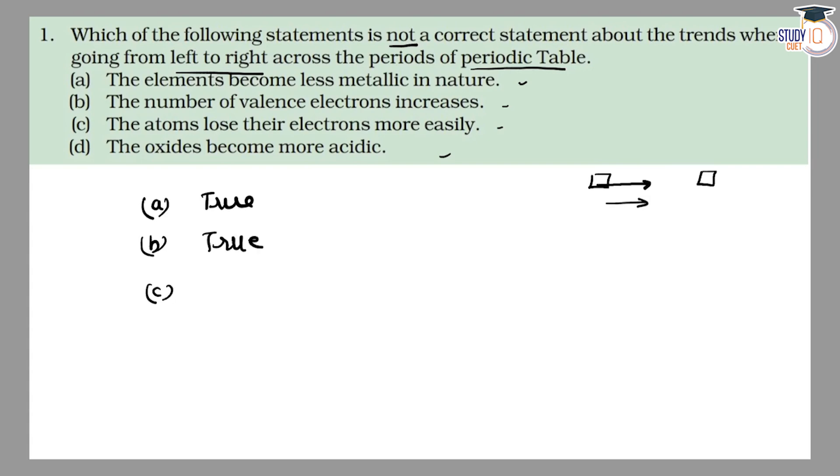Option C: Atoms lose their electrons more easily. Now on the right-hand side, non-metallic nature increases. Left-hand side metals easily lose electrons, while right-hand side non-metals need electrons. So the C statement is wrong, this is false.